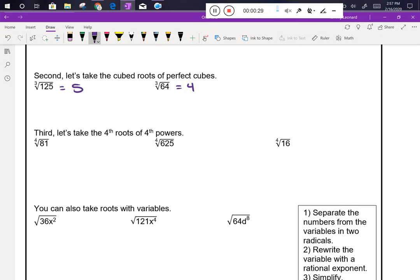The fourth root of 81 is 3 because 3 to the fourth equals 81. The fourth root of 625 is 5 because 5 to the fourth is 625. The fourth root of 16 is 2 because 2 to the fourth is equal to 16.